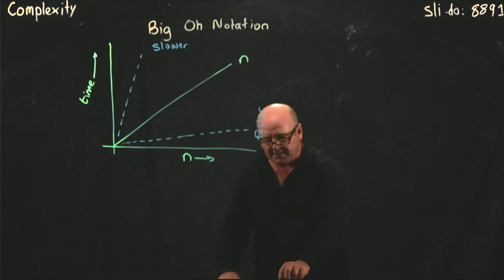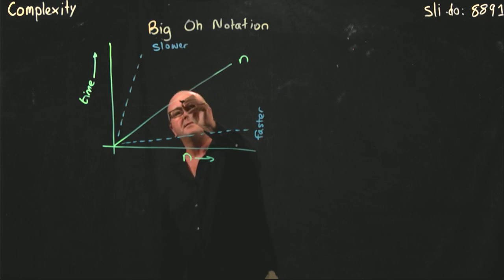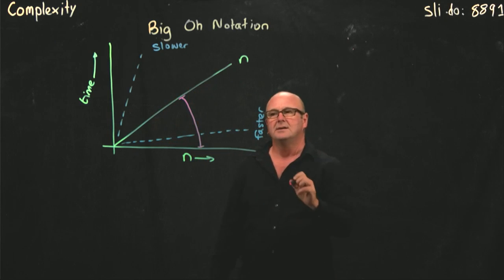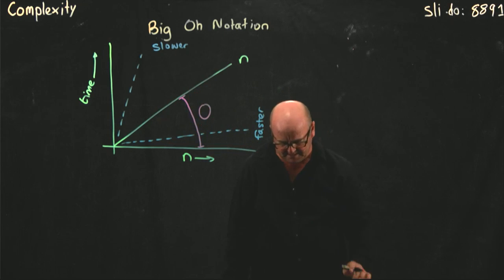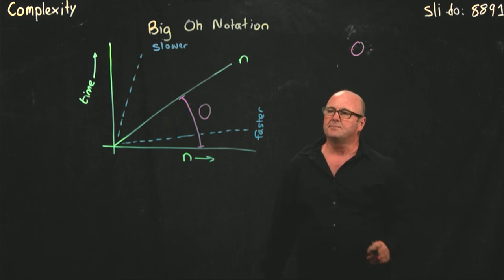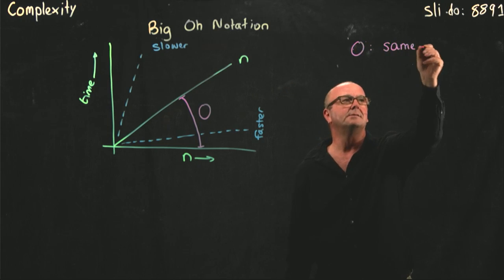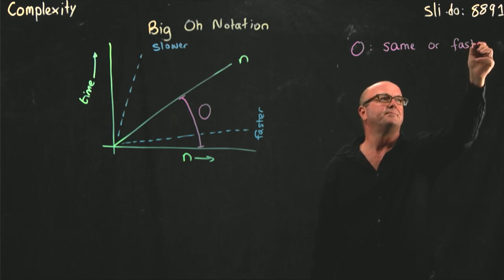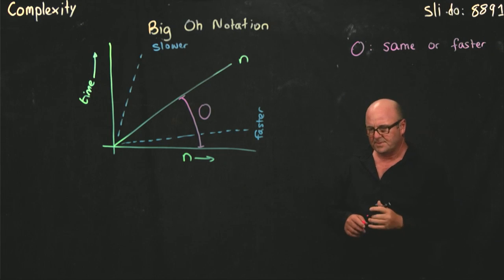So the way that we describe these computationally is using big O notation. And we say that if something is in this region, which includes the line down here, it has big O complexity. So big O complexity is that something is either the same or faster than whatever we're comparing.